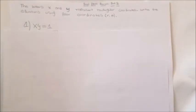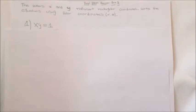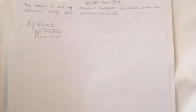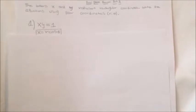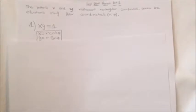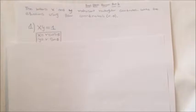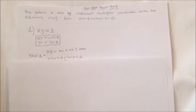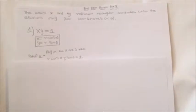The letters x and y represent rectangle coordinates. Write the equation using polar coordinates r comma theta. We are given that xy equals 1, and we know that x is equal to r cosine theta and y is equal to r sine theta. The first step is to plug in the values of x and y, giving us r cosine theta times r sine theta equals 1.